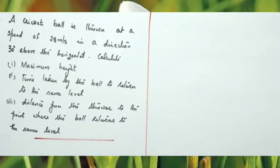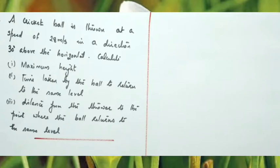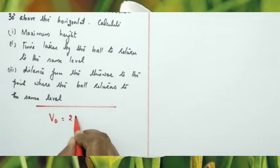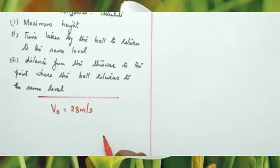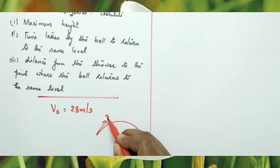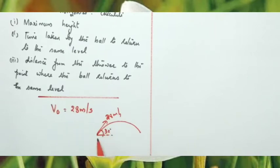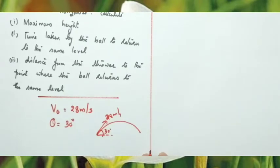Next question: a cricket ball is thrown at a speed of 28 m/s in a direction 30° above the horizontal. Calculate the maximum height, time taken to return to the same level, and the horizontal distance from the thrower. The given values are: initial velocity V₀ = 28 m/s, angle of projection θ = 30°, g = 9.8 m/s².